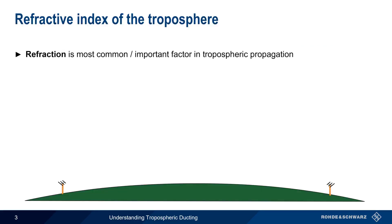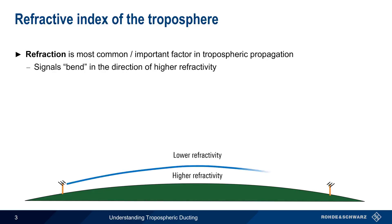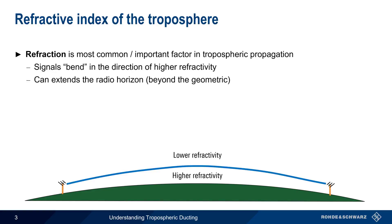Refraction is the underlying principle for most tropospheric propagation at VHF. Refraction causes signals to bend in the direction of higher refractivity, and thus can extend the radio horizon beyond the geometric horizon. The higher refractivity at lower altitudes means that normal atmospheric behavior is to refract VHF signals back towards the ground.